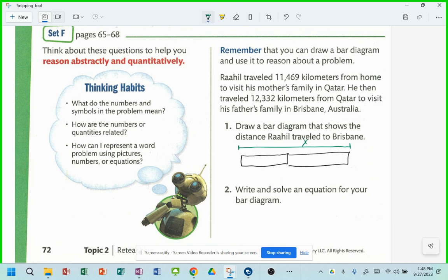So let's do it. We know that this - let's call this one A. Let's call this one B. We know that A is 11,469, right? That's the kilometers to his family's home to Qatar. So let's put that right in here, 11,469. And from Qatar to Brisbane, let's do that as 12,332, right?